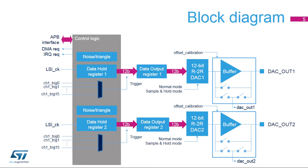Here you can see the simplified block diagram of the Digital to Analog Converter. This DAC block is supplied by VDDA. The DAC is an APB slave that supports DMA requests to fill the data hold register. Either of the DAC OUT X signals can be disconnected from the corresponding output pin, which can then be used as an ordinary GPIO.